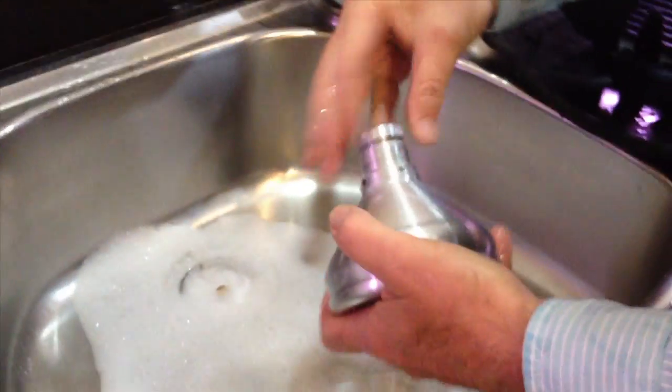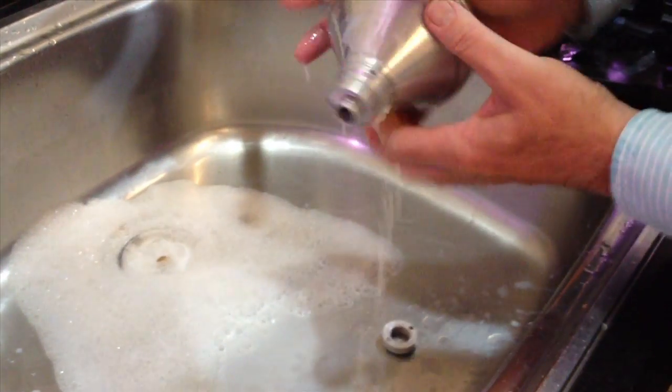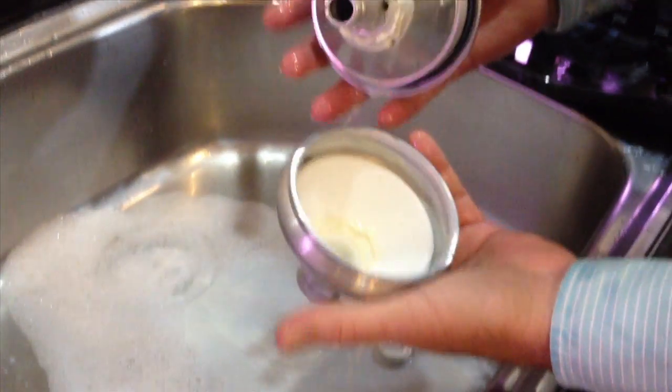When we disassemble the spinner, we can see that the butter is forming on the inside of the disks, and it's preventing that cream from moving through. It is good butter though.